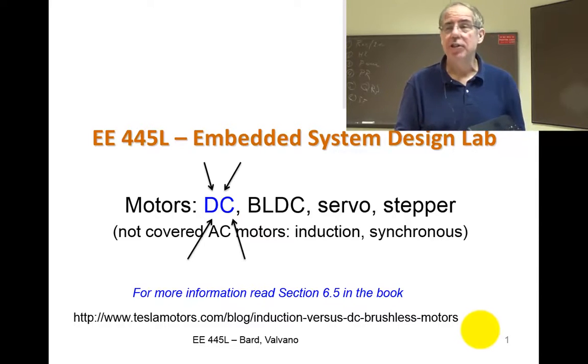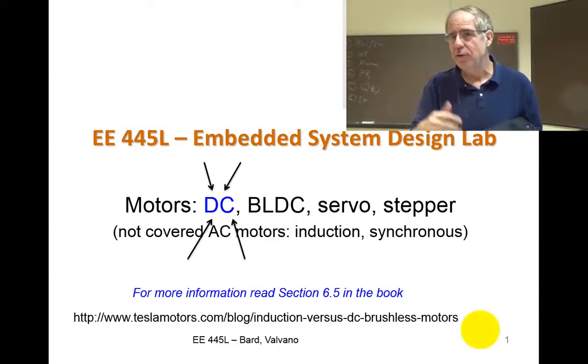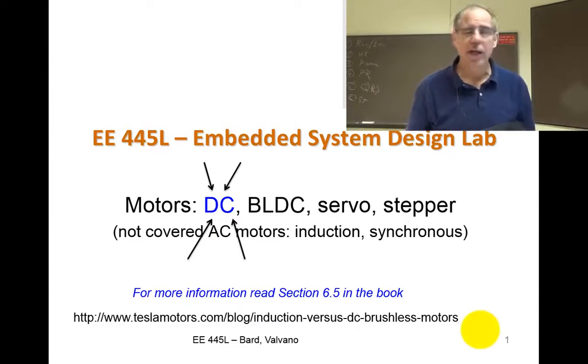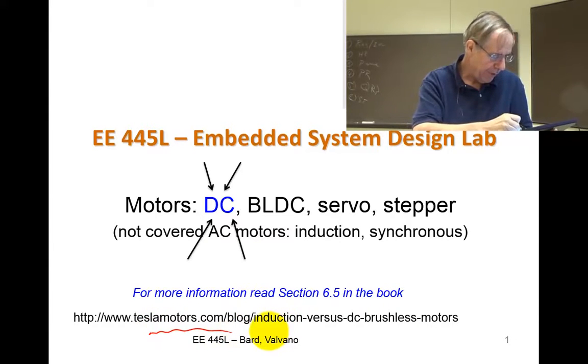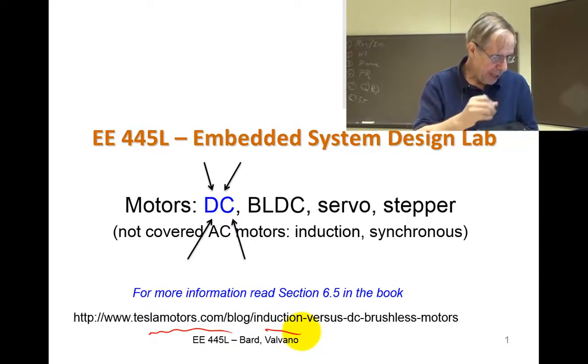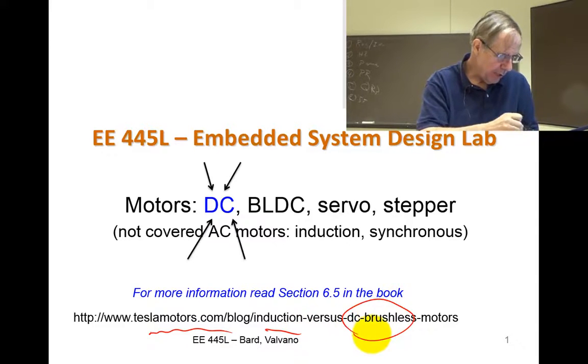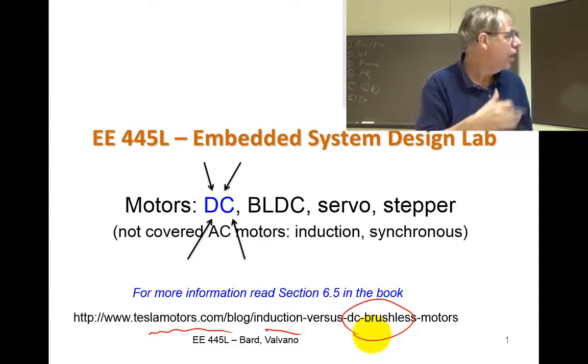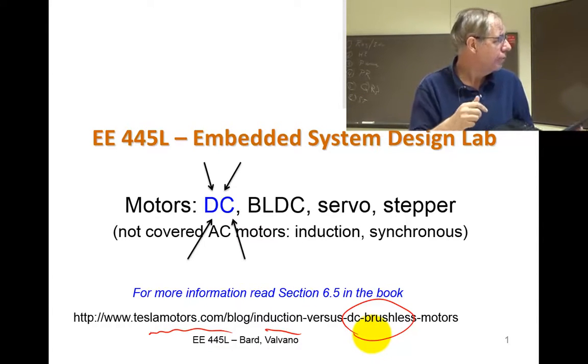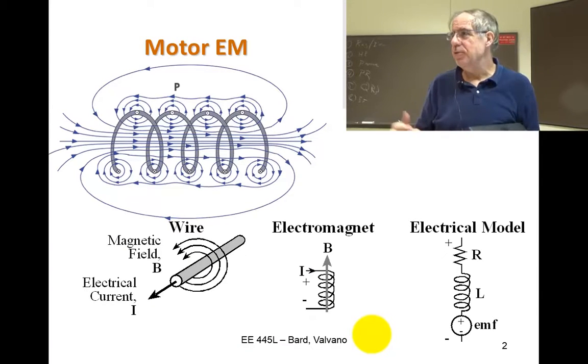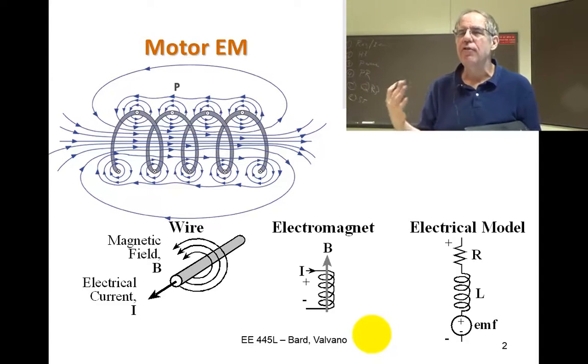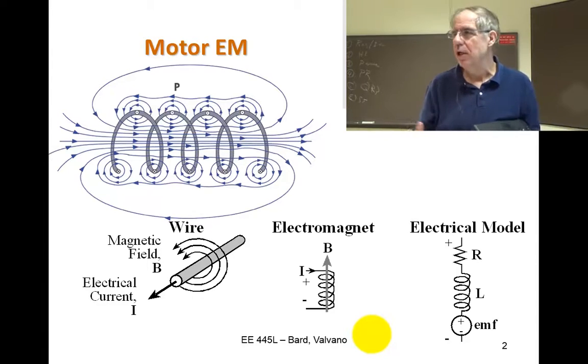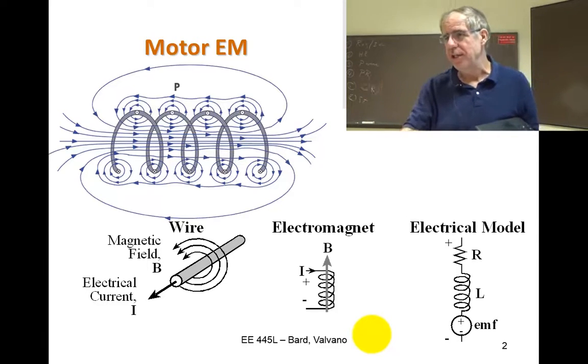If you want to know more about motors that don't have anything to do with 319K and 445L or 445M, if you want to know how they really make electric cars, Tesla has a nice website that talks about how they use their AC induction motors. A lot of the other electric car manufacturers use brushless DC motors. We're going to do a couple of things to convert electricity into force. That's the essence of a motor. It turns out we can also convert force into electricity. That's a generator.